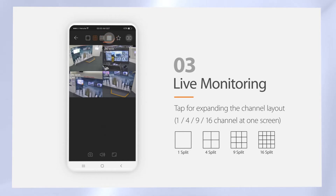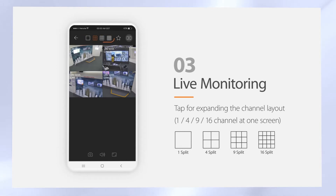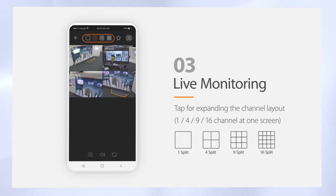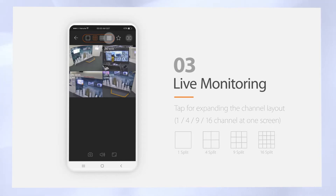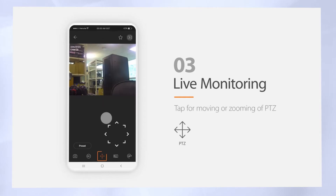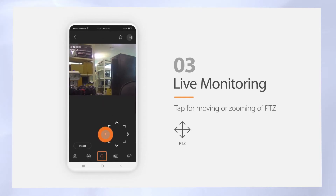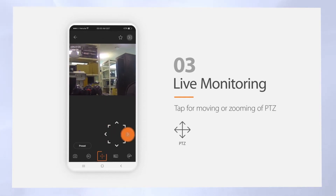You can expand the channels and layouts for 1, 4, 9, or 16 channels on one screen. When you double click a single channel icon, you can see the single channel full screen, where it will show different icons according to the camera's features.